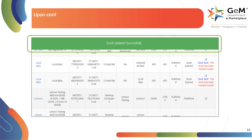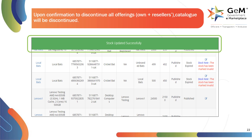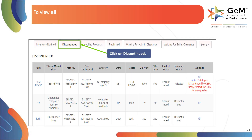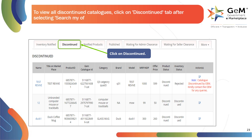Upon confirmation to discontinue all offerings, the catalog will be discontinued. The system will give a success prompt upon discontinuation. To view all discontinued catalogs, click on the discontinued tab after selecting search my offerings within catalog.